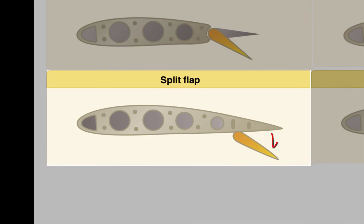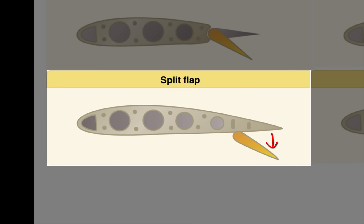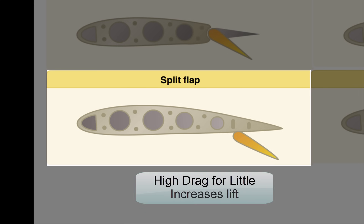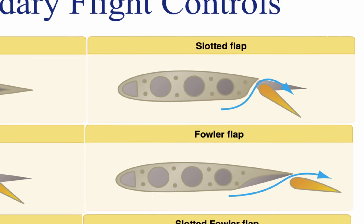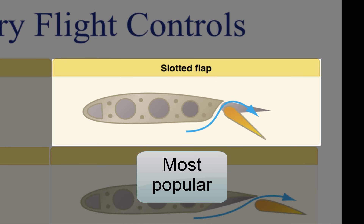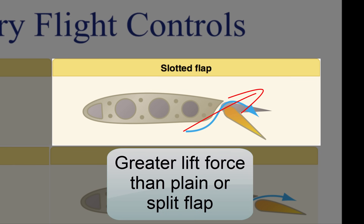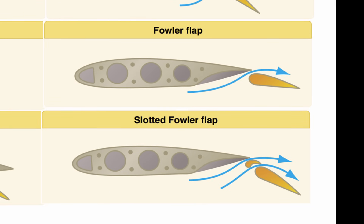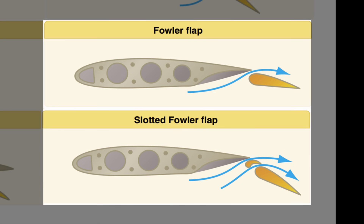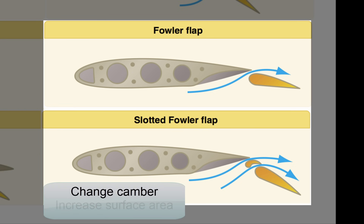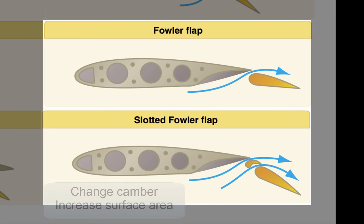Both the plain and split flap designs cause high drag for little lift. The slotted flap is the most popular flap used today. It allows high-energy air to flow from the bottom of the wing to the top, causing a much greater lift force than either the plain or split flap. Fowler flaps work much like slotted flaps, but they not only change the wing camber, they also increase the wing's surface area by sliding back and down rather than just down.